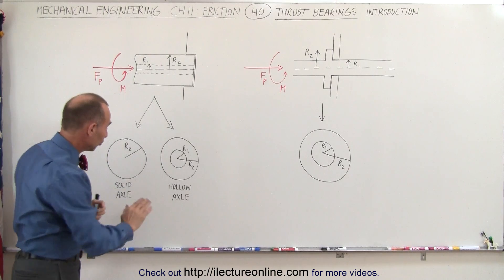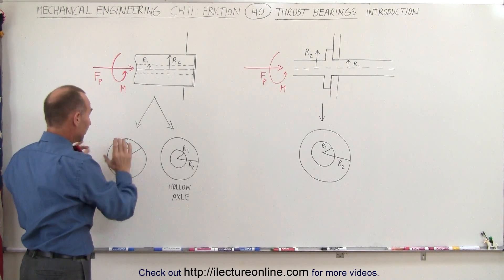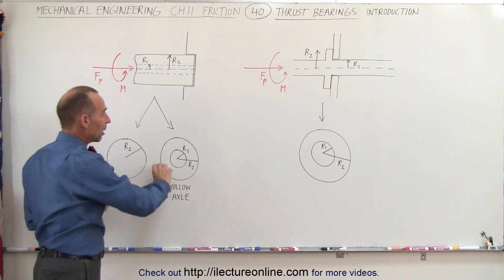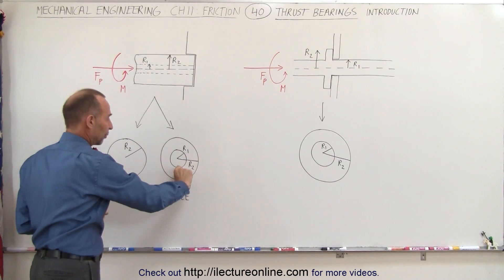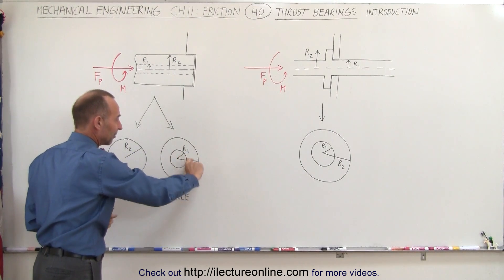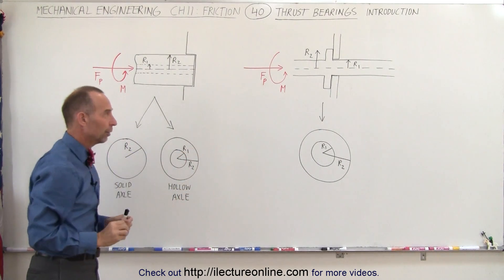Now notice it could be a solid surface if the bearing itself or the axle itself is solid, and it can be a hollow axle. So therefore we can see that the only surface touching the end here is this surface on the outside and then the center here is hollow.